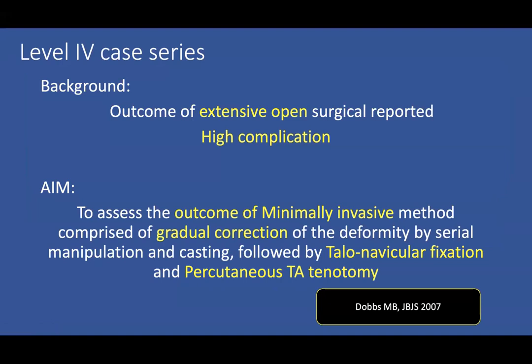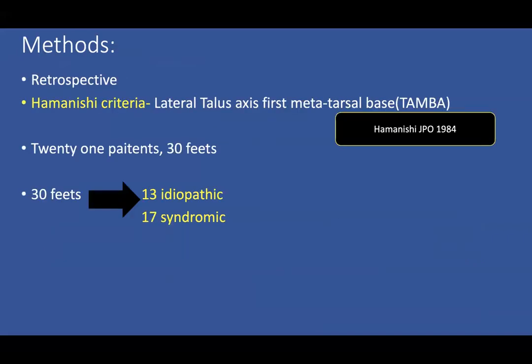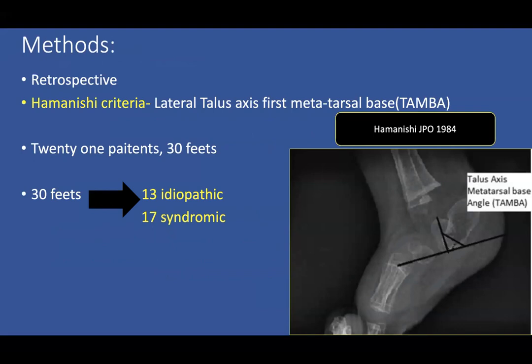Good morning. Presenting a paper from JPO April 2021, conducted at Sheffield University Medical School, United Kingdom. Title: 'The Outcome of Minimally Invasive Approach for Congenital Vertical Talus with Comparison Between the Idiopathic and Syndromic Foot.' This is a level 4 case series. Previously, vertical talus was treated with corrective casting and extensive open surgical technique, associated with high complication rates including recurrence, overcorrection, undercorrection, and stiffness. Dobbs in 2006-2007 introduced the minimally invasive approach, on which this current study is based. Using the Hemanshi criteria — lateral talus axis first metatarsal angle base greater than 30 degrees — to define vertical talus. After exclusions, 21 patients in 30 feet were included; 13 idiopathic and 17 syndromic.